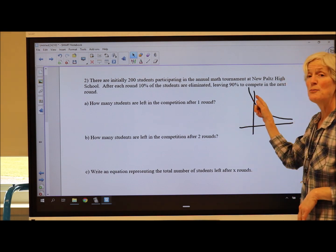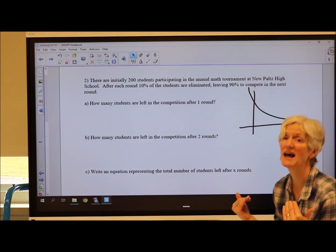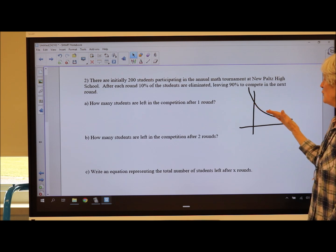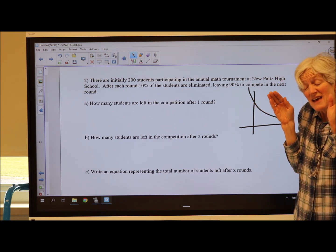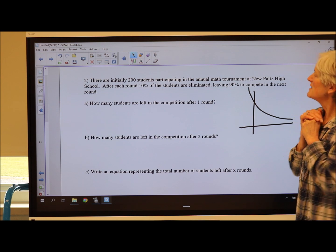When I have a lot of people and I'm cutting 10%, I'm going to lose a lot of people. As I have fewer and fewer people, that 10% is going to be fewer and fewer people. Does that make sense?